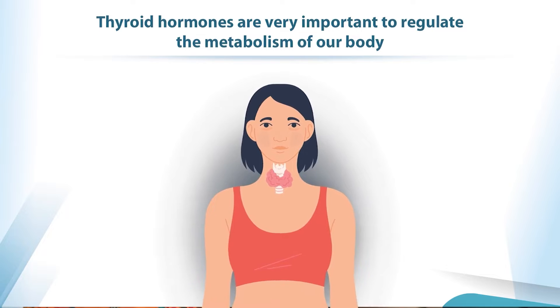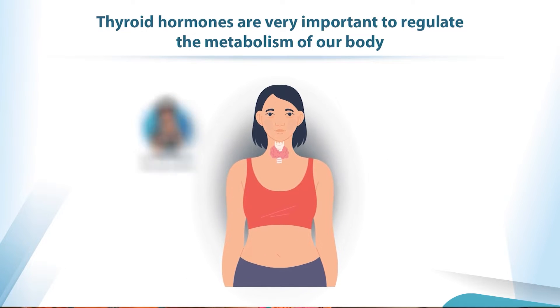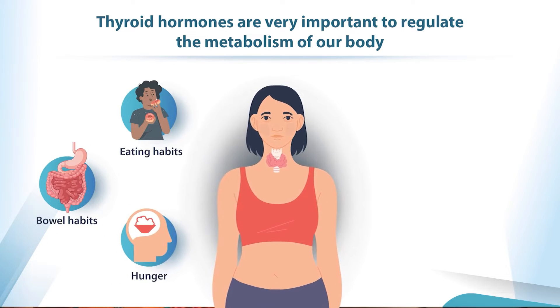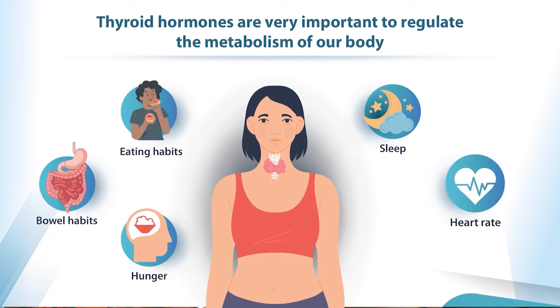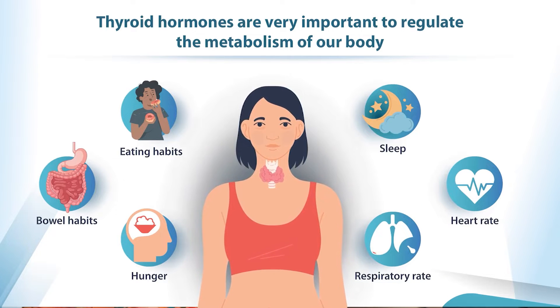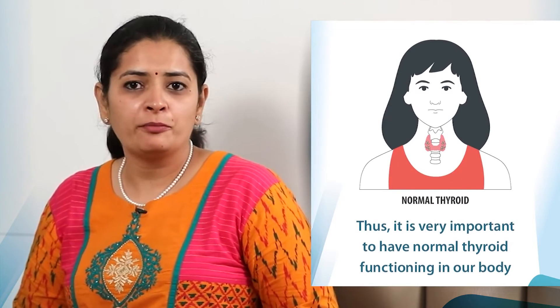These hormones are very important to regulate the metabolism of our body. By metabolism I mean every process that goes on in the body, which includes our eating habits, our bowel habits, hunger, sleep, heart rate, breath rate, and in women, menstruation — the cycles and the dates of the cycles. All these are regulated by thyroid hormones. By this, I am sure you would have understood how important it is to have normal thyroid functioning in our body.